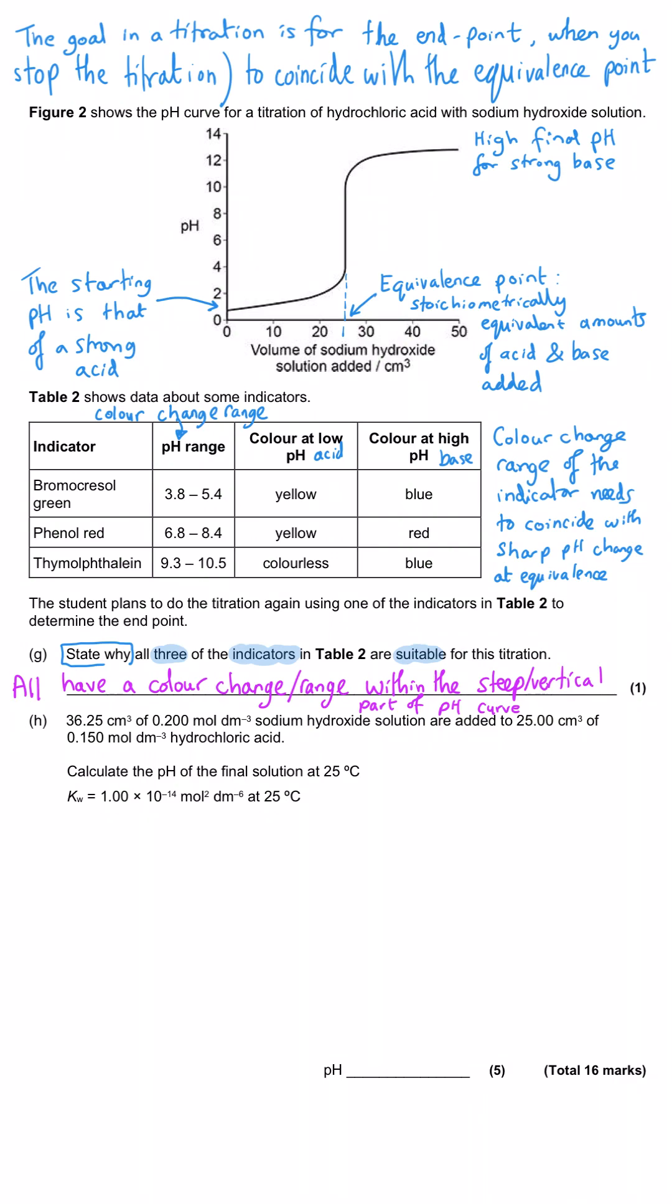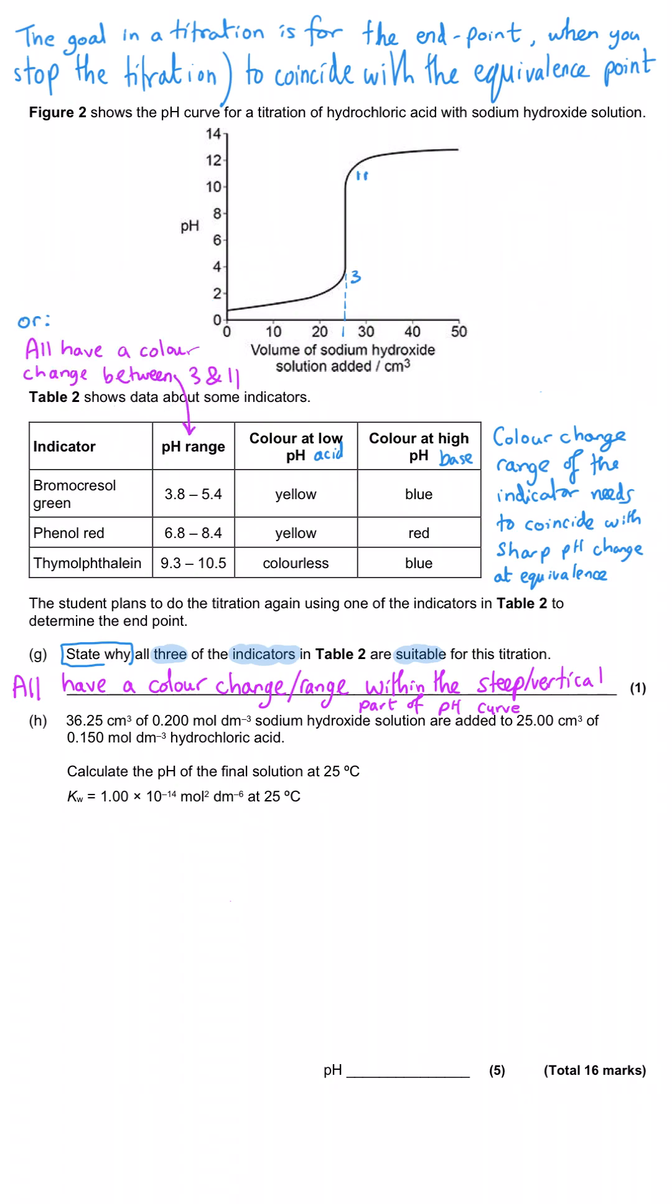The suitability of an indicator is determined by whether it changes colour at that rapid pH change that occurs at the end point. They all have their colour change which coincides with this steep or vertical region of the titration curve. Bromo-cresol green changes colour at pH 3.8, which is about here, up to about 5.4, which is around about here. So it's towards the bottom end of this vertical region, but it is still acceptable.